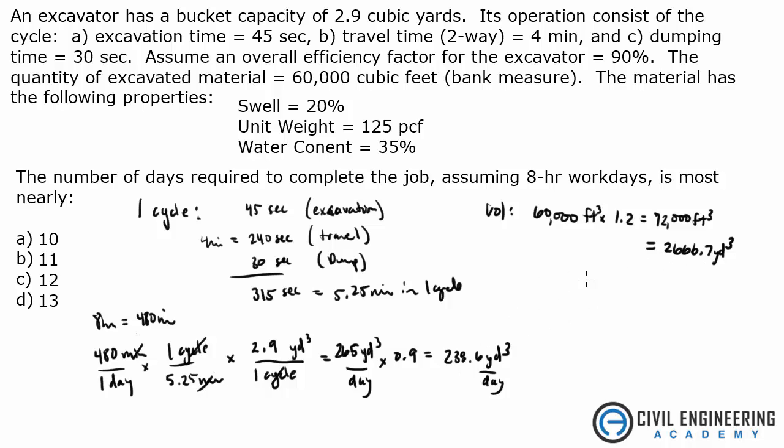Now all we need to do is divide these two and we'll figure out how many days. Let's take 2666.7 cubic yards divided by 238.6 cubic yards in a day. And the cubic yards cancel. That gives me 11.18 days. Of course, you got to think about that. 11.18 days, really, you're going to round up to 12 days. Because you're not going to say it takes 11 days, you're over 11 days. So that's going to be 12 days of work, 8 hour work days. And the answer is C.